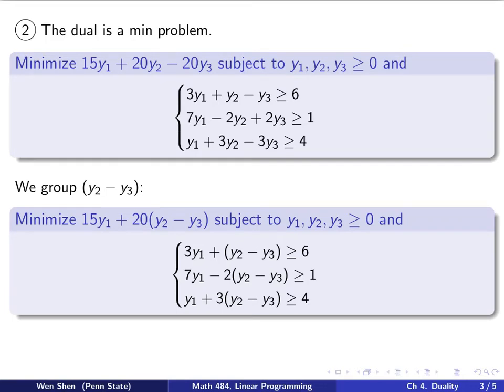So what is interesting in this example is, let's look at y2 and y3. We see here, I actually have y2 - y3 if I take the 20 out. And then here I have y2 - y3. Here, if I take the 2 out, I get y2 - y3. And here, if I take the 3 out, I have y2 - y3. So it seems like y2 and y3 always appear together as a group, y2 - y3. So we're going to group that. This is basically a rewritten version of the previous one, where I just regrouped y2 and y3 together.